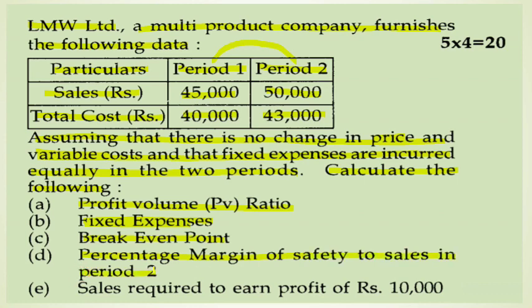Period 1 is specifically asked for the percentage margin of safety. The fifth point is: sales required to earn a profit of ₹10,000.